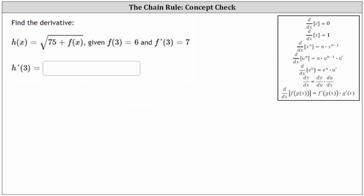So we need to find the derivative h prime of x. Let's firstly write the square root using a rational exponent. We can write h of x as the quantity 75 plus f of x raised to the power of 1/2.